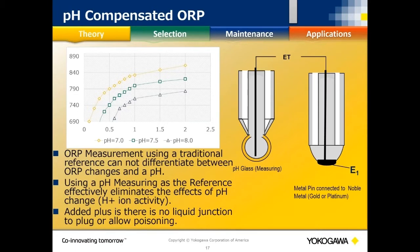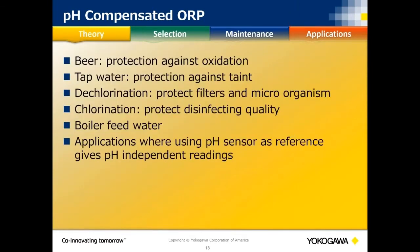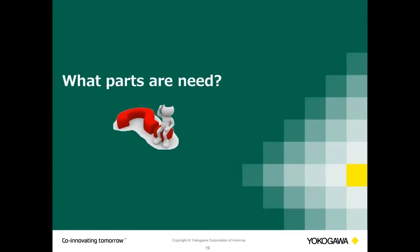pH compensated ORP is not as common as traditional ORP, but it appears in cooling towers, beer fermentation, tap water dechlorination, and boiler feed water. If you use this approach, you will have two independent measurements running side by side — you cannot use the same pH glass as both a true pH electrode and a reference simultaneously.